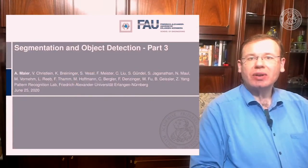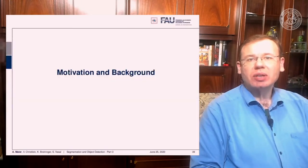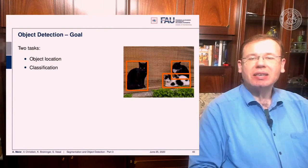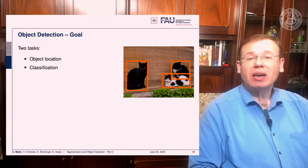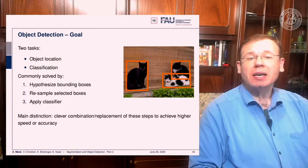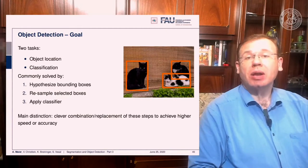This is already part three of our short lecture video series on segmentation and object detection, and now the topic is object detection. The idea is that we want to localize objects and classify them — we want to figure out where the cats are in an image and whether they are actually cats. This is commonly solved by generating hypotheses about bounding boxes, resampling those boxes, and applying a classifier.